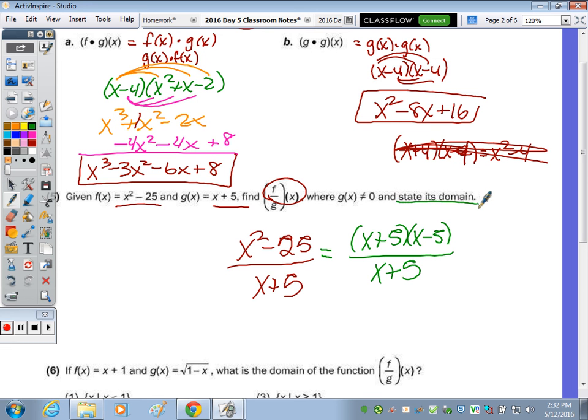This wants you to state its domain. So maybe before you cancel, you want to state the domain. You need to look at the denominator. The denominator can't be 0. So our domain is X not equal to negative 5. So that's the domain. And then the answer, cancel, cancel, is X minus 5.